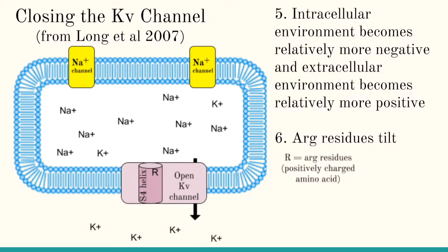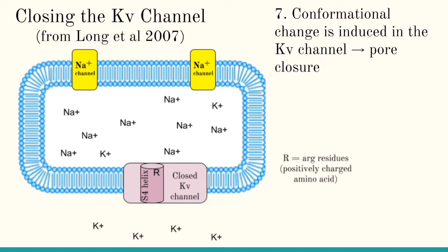In order to close the KV channel, effectively the reverse of what I described occurs. As potassium flows out of the cell and down the gradient, the intracellular environment becomes relatively more negative and the extracellular environment becomes relatively more positive. It's important to remember that the sodium channel also closes at some point in this process. At a certain point, the positive arginine residues become more attracted to the more negatively charged intracellular environment. As a result, the arginine residues in the S4 helix move 15 angstroms towards the intracellular environment, inducing a conformational change that causes the protein to revert back to the closed conformation.